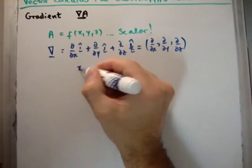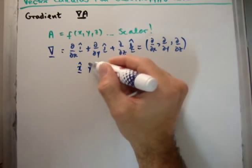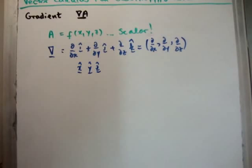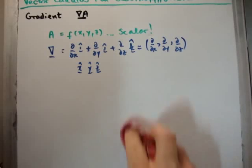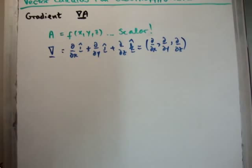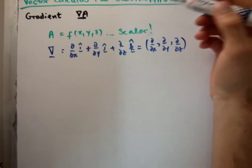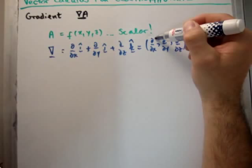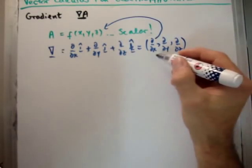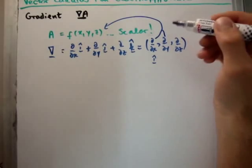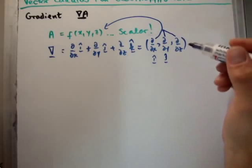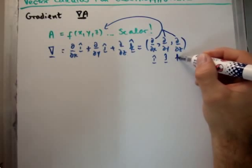You might sometimes see x-hat, y-hat, and z-hat used, but I prefer i, j, and k, so I'll stick with that. To operate on a scalar function, you simply take the whole function and differentiate it with respect to x first — that becomes your i-hat direction. Then differentiate it with respect to y — that becomes your j-hat direction. Finally, differentiate it with respect to z — and that gives you your k-hat direction.